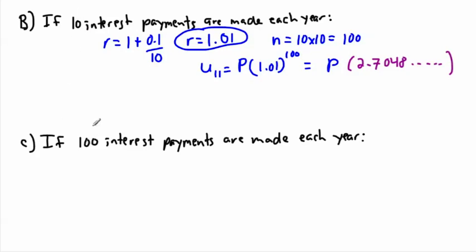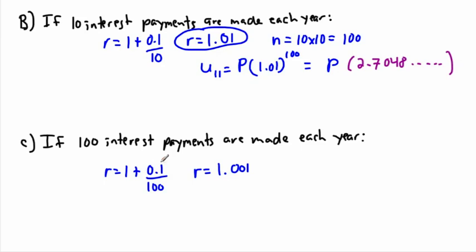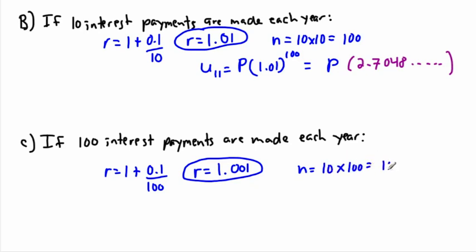What if we instead have 100 interest payments per year? The rate becomes 1 plus 0.1 divided by 100, giving R = 1.001. And N is 10 years times 100 payments per year, giving 1,000 periods. So U11 equals P times 1.001 to the power of 1,000.